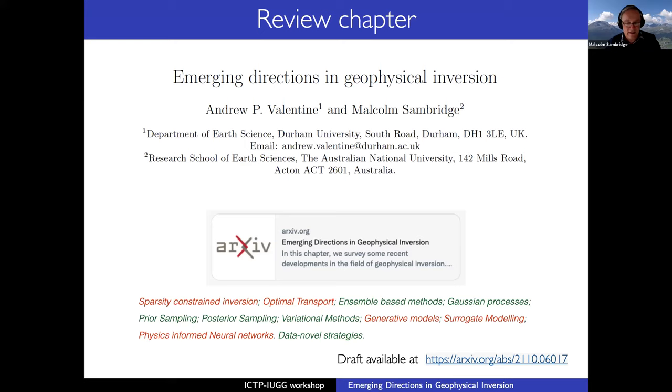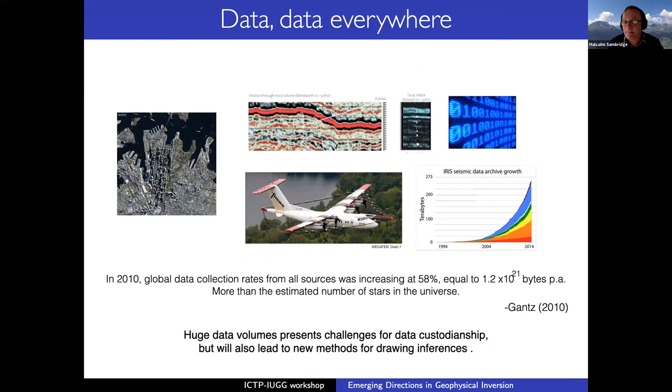And the topics covered in that are listed at the bottom here from aspects of sparsity constrained inversion, optimal transport, ensemble methods, a whole series of things where we think they are emerging. And it's really the areas in red that I want to talk about today. Sparsity, optimal transport, generative methods of surrogate modeling, part of machine learning, and also physics informed neural networks, particularly how they influence geophysical inversion. And I think it's an exciting time to be alive, essentially.